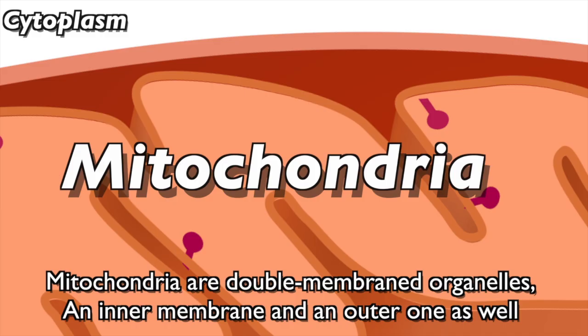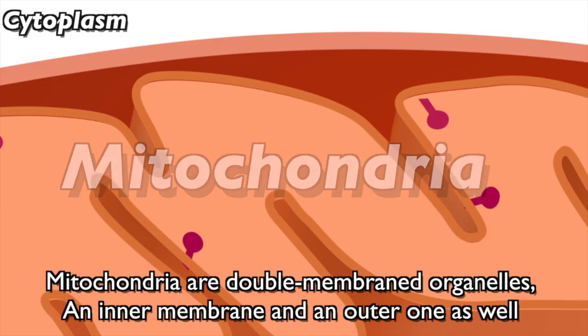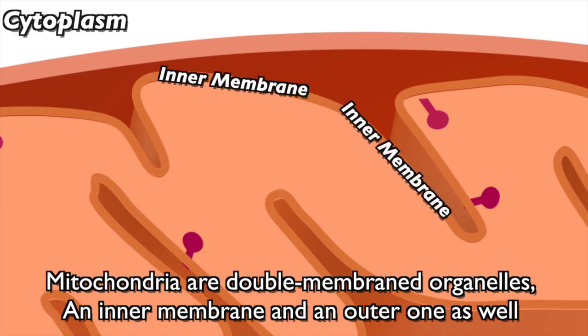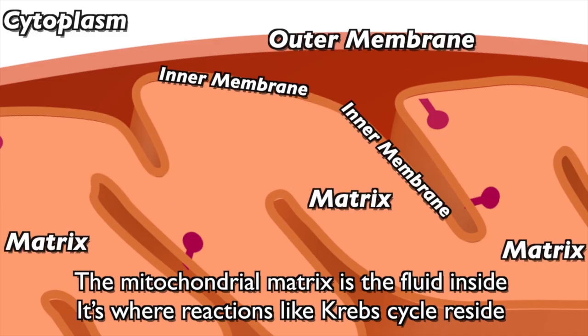Mitochondria are double membrane organelles, with an inner membrane and an outer one as well. The mitochondrial matrix is the fluid inside — it's where reactions like the Krebs cycle reside.